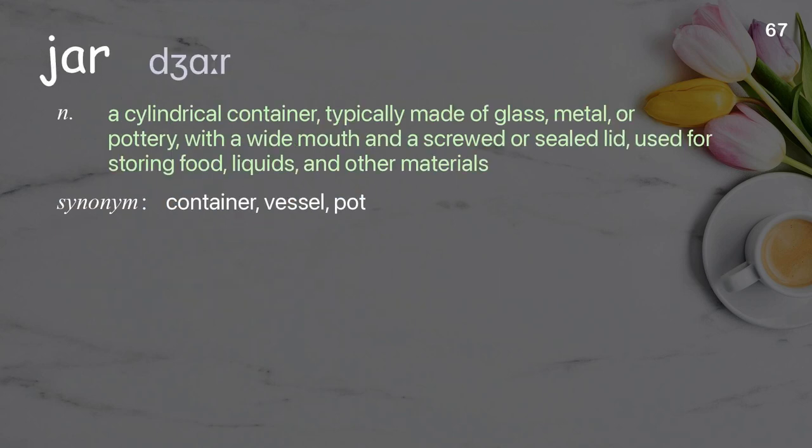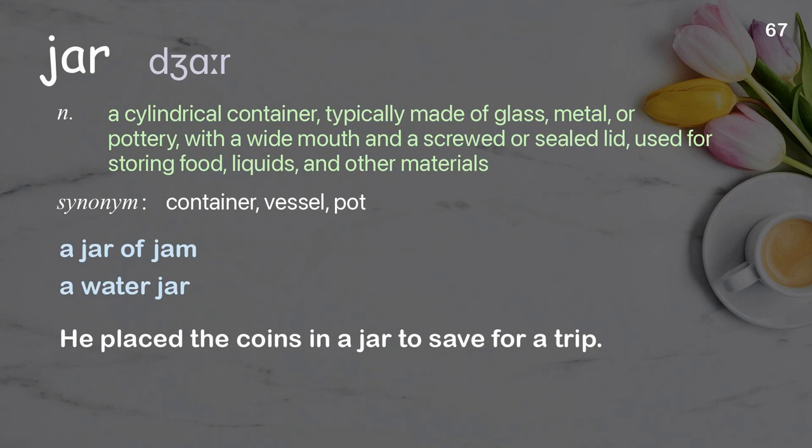Jar: A cylindrical container, typically made of glass, metal, or pottery, with a wide mouth and a screwed or sealed lid, used for storing food, liquids, and other materials. Examples: A jar of jam. A water jar. He placed the coins in a jar to save for a trip.